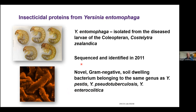Yersinia species including Y. pestis, Y. pseudotuberculosis, and Y. enterocolitica are responsible for a variety of human diseases. Y. entomophaga, however, seems to be an insect-specific pathogen. This work was part of a larger multi-group collaboration focused on identifying candidate new biopesticides, and Y. entomophaga became quite interesting because it seemed to secrete very potent bacterial toxins that specifically targeted insects — including Costelytra zealandica and a wide range of globally and economically significant insect pests.